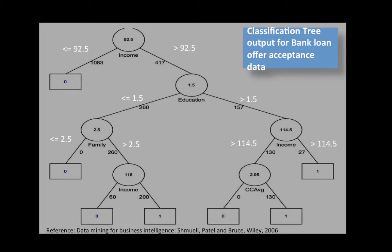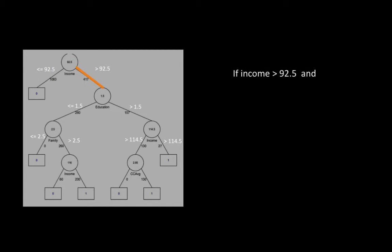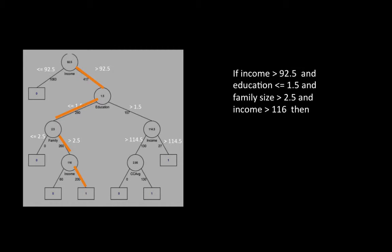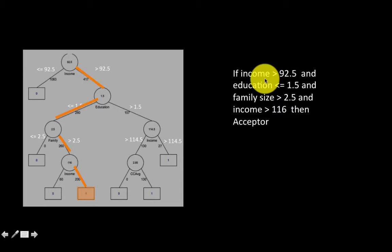We will later look at how the method actually manages to do this, but as usual we will not be doing this by hand — we will let the computer figure it out. All we need to do is understand the essence of the technique, how to provide the inputs, and how to interpret the output. One thing to note: rules can sometimes be simplified. For example, if income is greater than 92.5 and also greater than 116, you can simply state income is greater than 116 — you do not have to say both conditions.